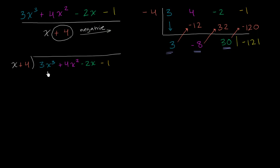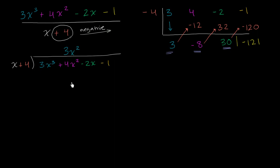If we're doing algebraic long division and set it up right over here, the first thing we want to think about is how many times does the highest degree term here, which is our x, go into the highest degree term here, which is our 3x to the third power. Well, x goes into 3x to the third power 3x squared times. So we'll write it in the x squared place — 3x squared times. Now, you might already see our parallel.